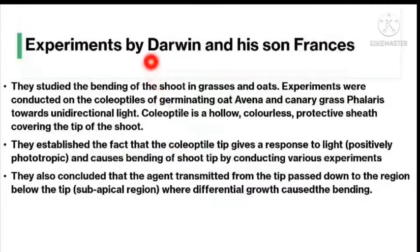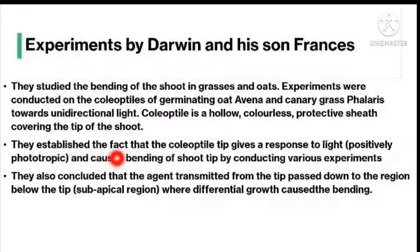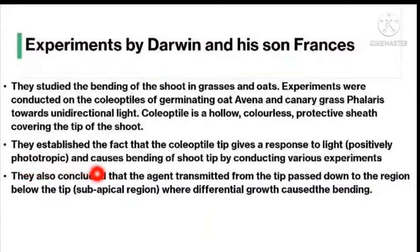Experiments by Darwin and his son Francis: they studied the bending of the shoot in grasses and oats. Experiments were conducted on the coleoptyles of germinating oat (Avena) and canary grass (Phalaris) towards unidirectional light. The coleoptyle is a hollow, colorless, protective sheath covering the tip of the shoot. They established that the coleoptyle tip responds to light positively — it is phototropic — and causes bending of the shoot tip.